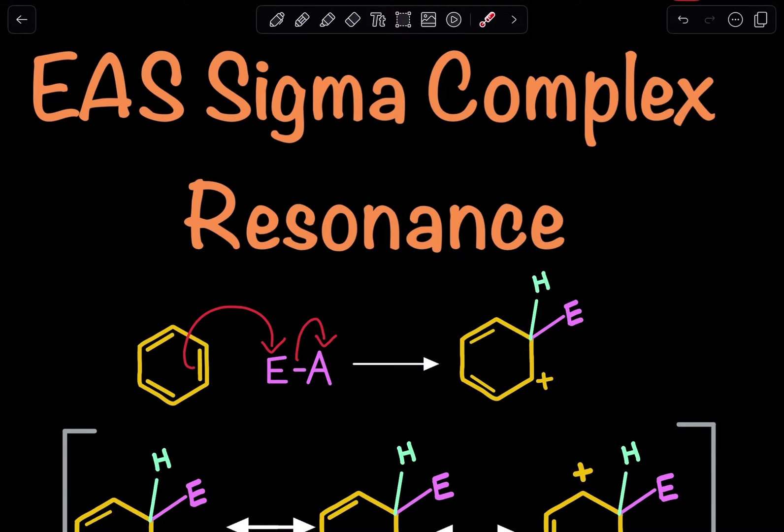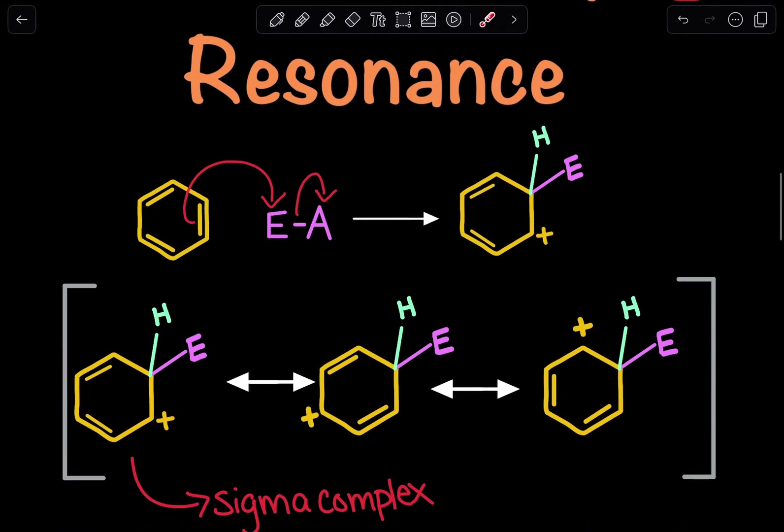As we're talking about electrophilic aromatic substitutions, we come across the sigma complex. The sigma complex is that first initial product after our first step in the mechanism.